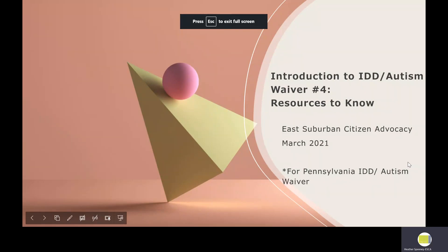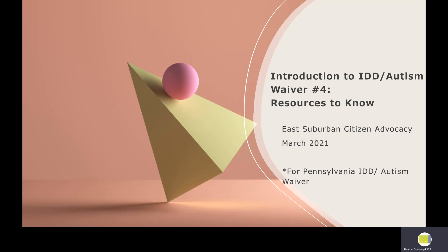Hi everybody, this is Heather Steene, Associate Director at East Suburban Citizen Advocacy. This is our fourth and final presentation within our series of Introduction to the IDD Autism Waiver. This topic is Resources to Know. If you're new to waiver, or even if you've been in waiver for a while but feel like you may not know a lot about it, we wanted to provide some really helpful resources so that you can reach out and find things or know where to look.